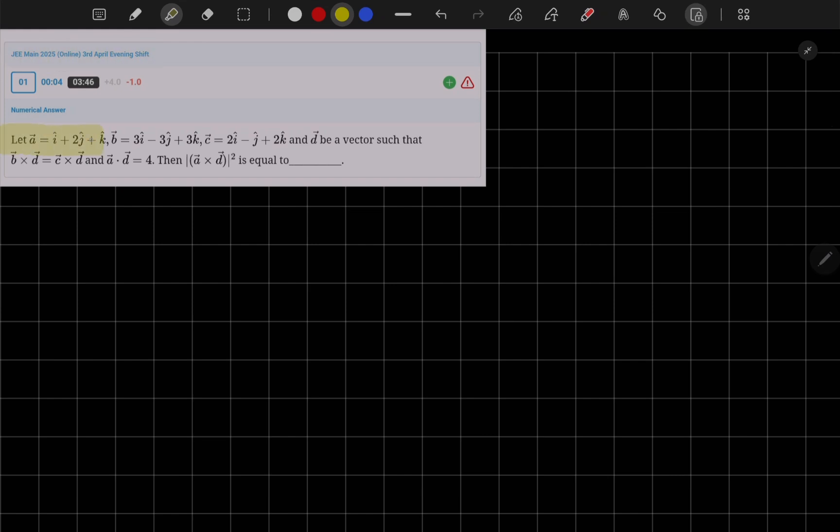The question is let A vector, B vector and C vector are given here and D is a vector such that B cross D equal to C cross D and A dot D value is 4. Then what is the value of magnitude of A cross D whole square?